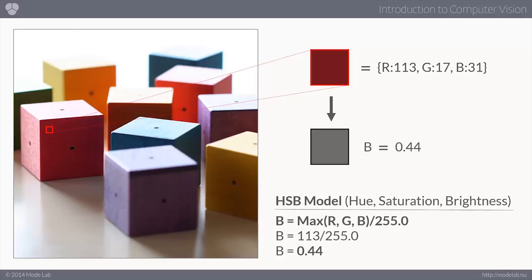So in this case, we have a maximum value. Our maximum value of any of these three values is 113. Our red value is the highest value. So our maximum value is 113 divided by 255. So in this model, the brightness is actually going to return 0.44.